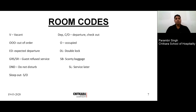These are the room codes used for filling up the report. We write V for vacant, OOO for out of order, ED for expected departure, CO for check-out, CI for check-in, SR for service refused, DND for do not disturb, SL for service later, and SO for sleep out. There are various codes required to write in the format.